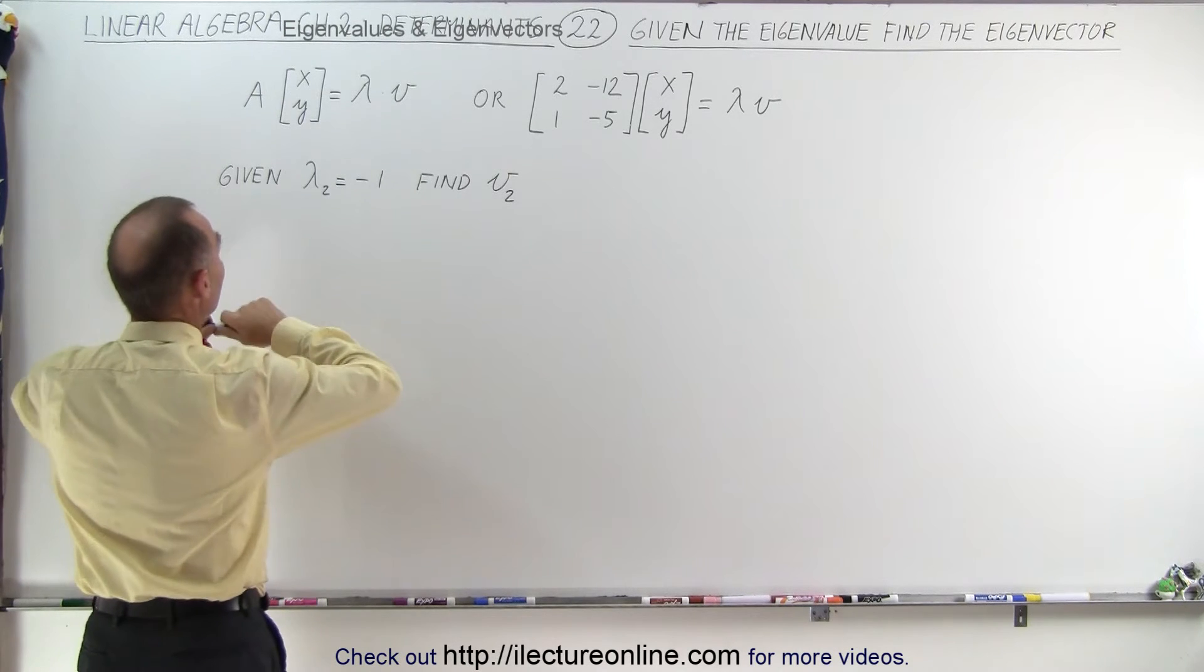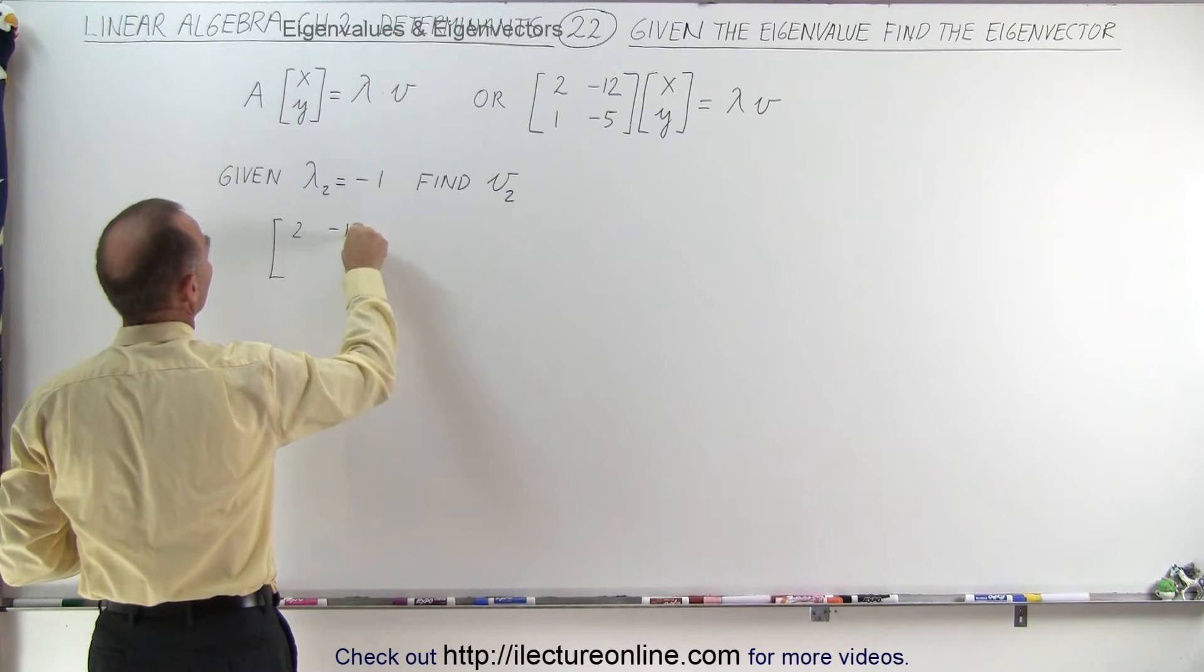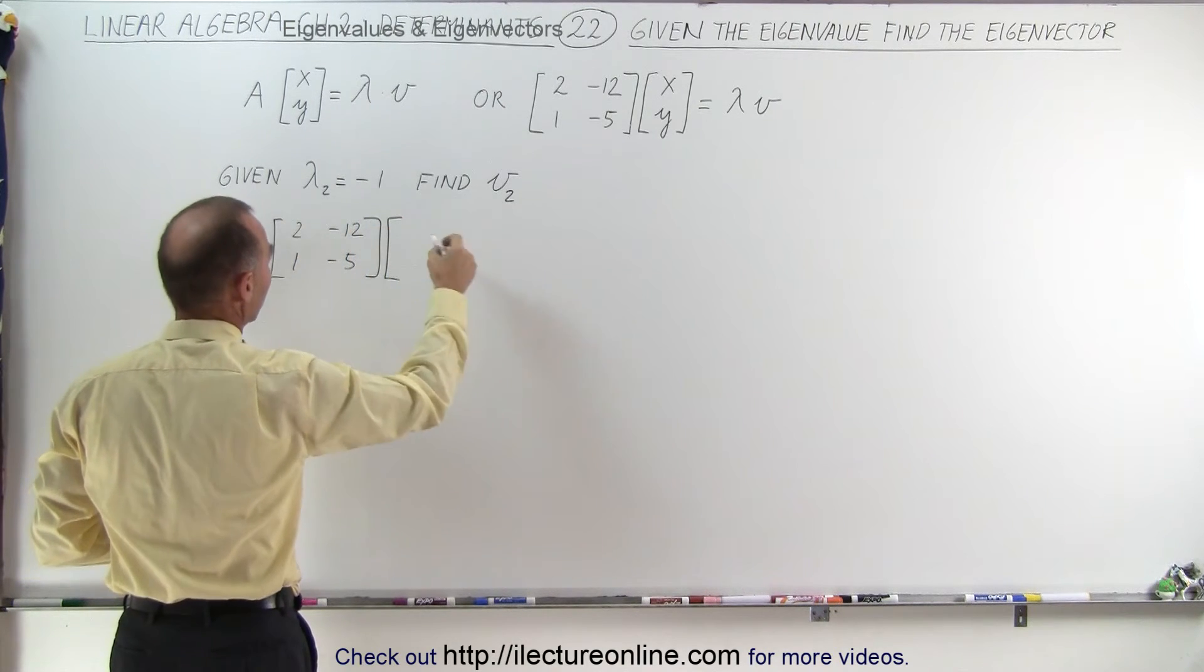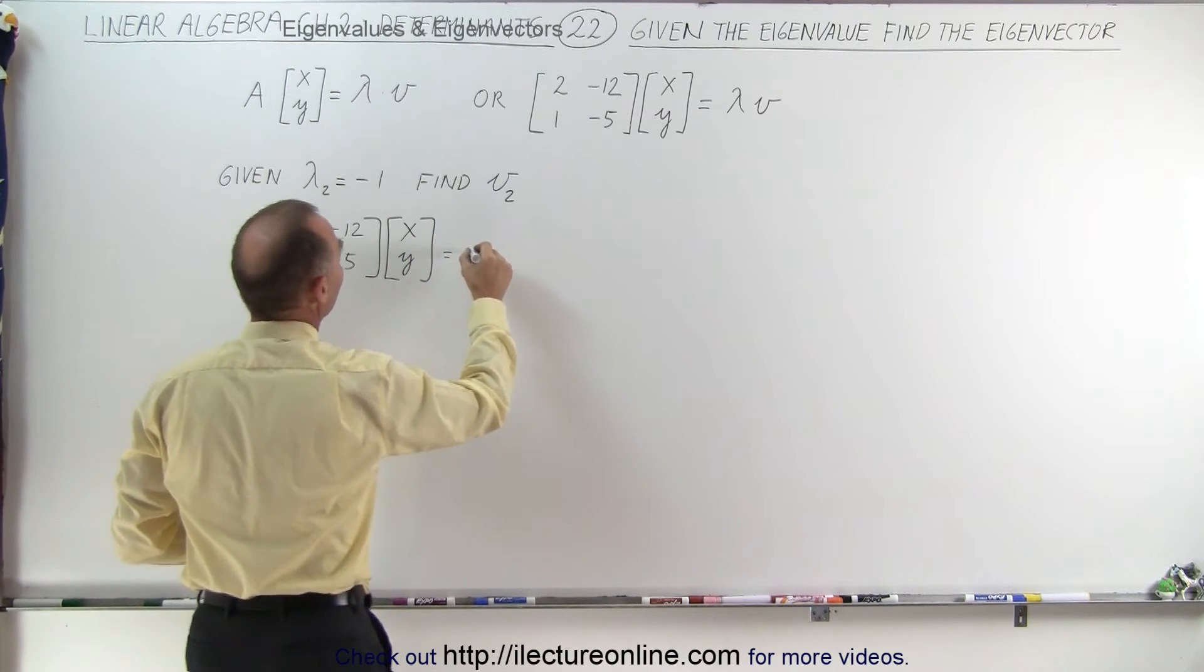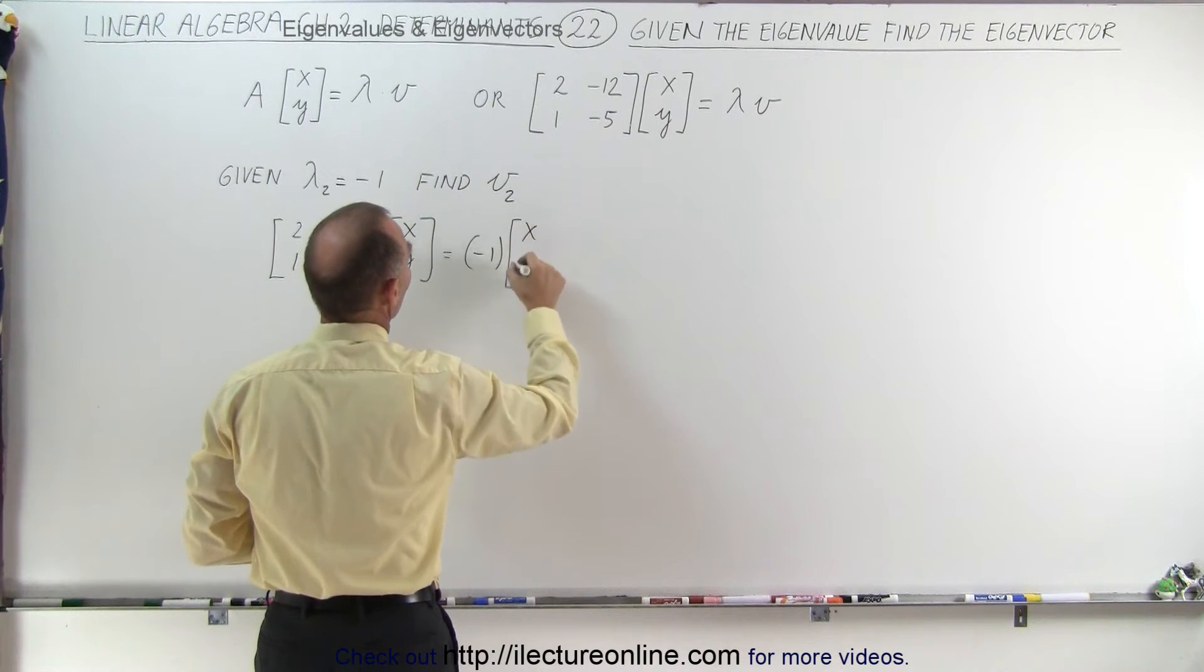First of all, we write down the matrix. We get 2, minus 12, 1, and minus 5, multiply times the vector we're looking for, x and y, and that will be equal to minus 1 times the vector we're looking for, which is x and y.